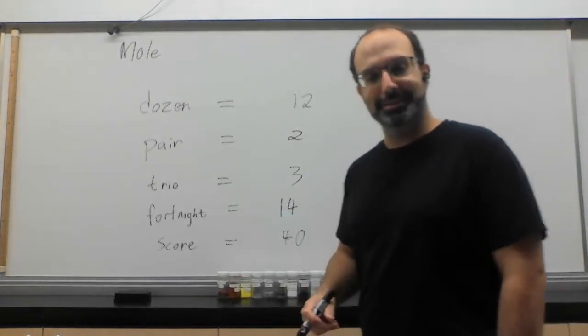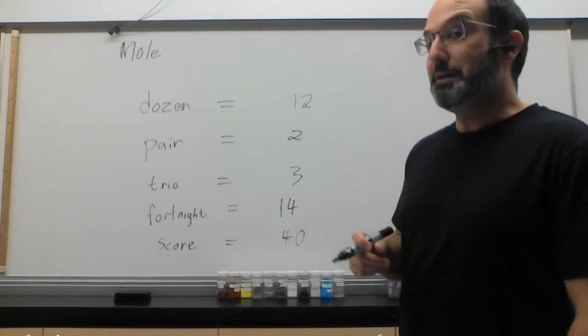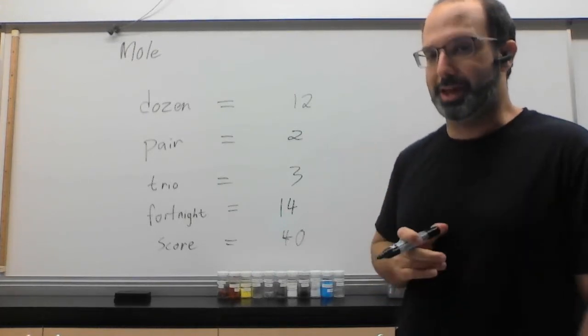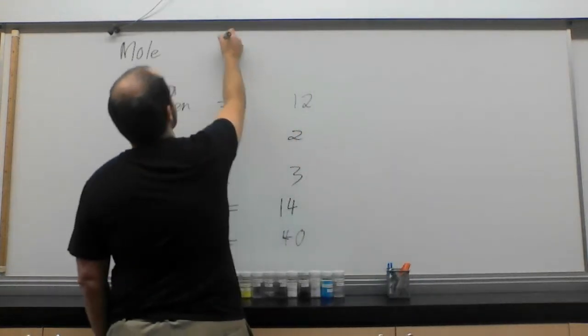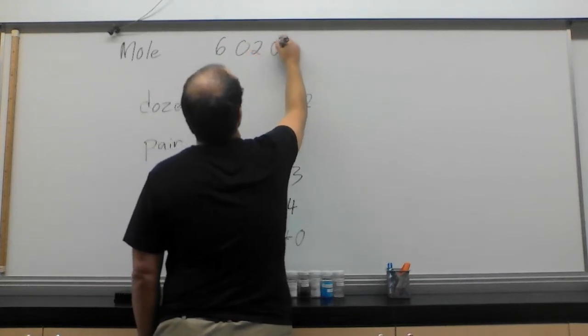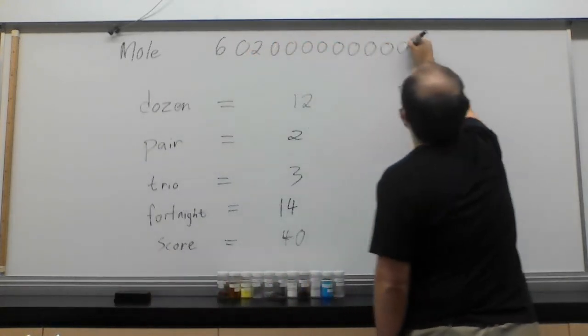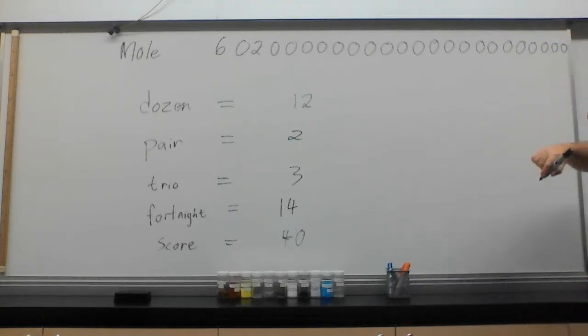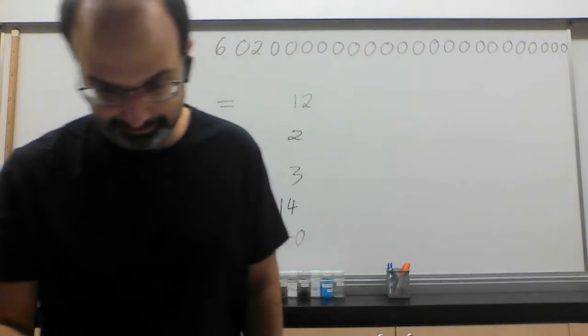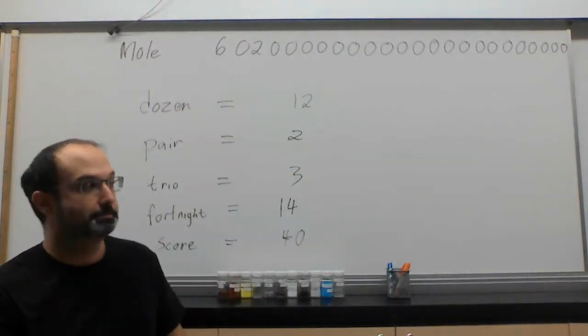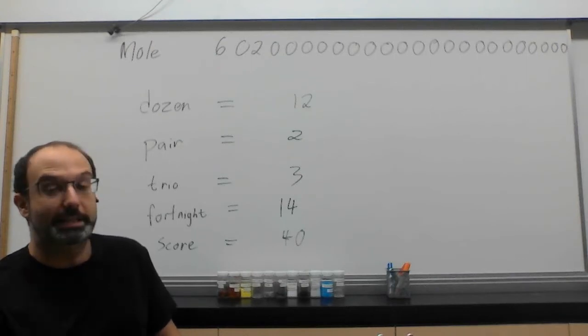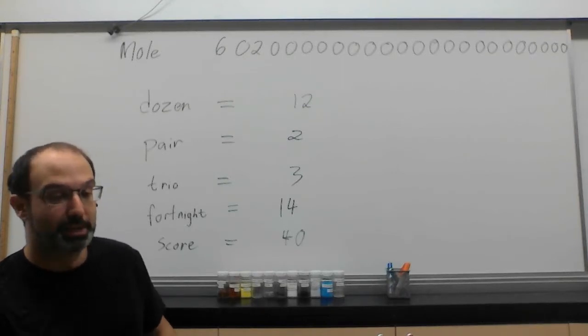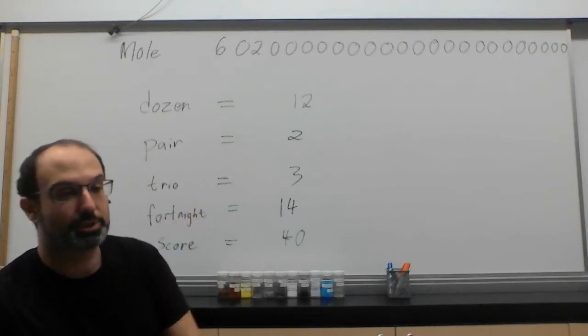A mole is also a word that means a number. It just means a very, very, very, very big number. Like, difficult to picture big. Because the number is 6.02 times 10 to the 23, that many zeros. Yeah, it's a lot, I know. Why that number? That's a little harder to answer. But that's the number that chemists chose. And it's a very important number because we use it a lot in chemistry.